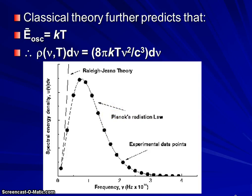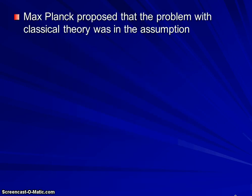Thinking about light in a significantly different manner, Max Planck proposed that the problem with classical theory was in the assumption that the energy of oscillation is directly related to temperature.